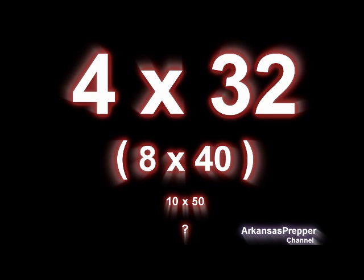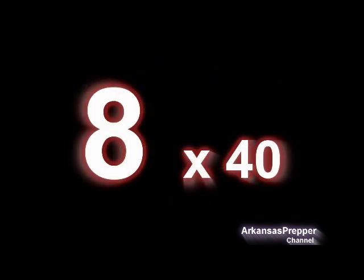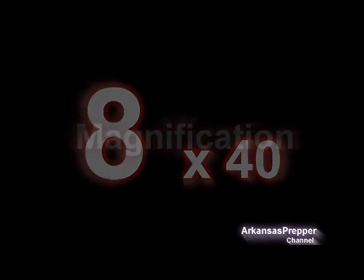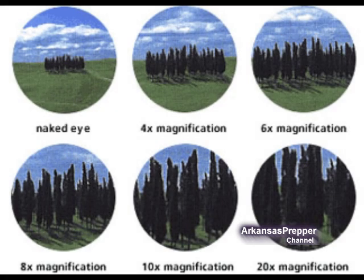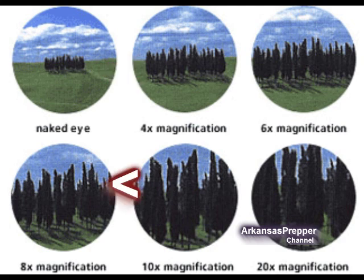I'm going to explain using the numbers 8x40, because that's what I've got. The first number — the 8 — has to do with magnification. Looking at these examples, the top left corner is what you'd see with the naked eye, and right below it is what you'd see with 8x magnification. This can be an advantage or sometimes a disadvantage.